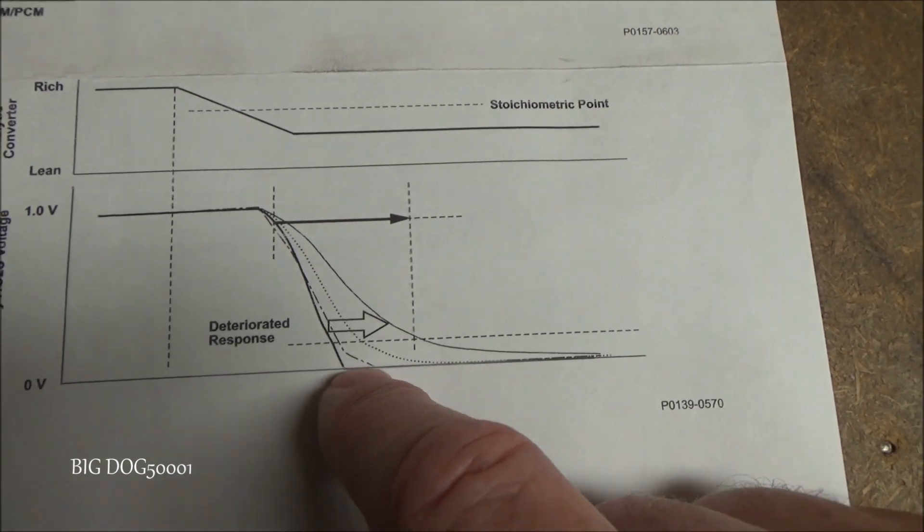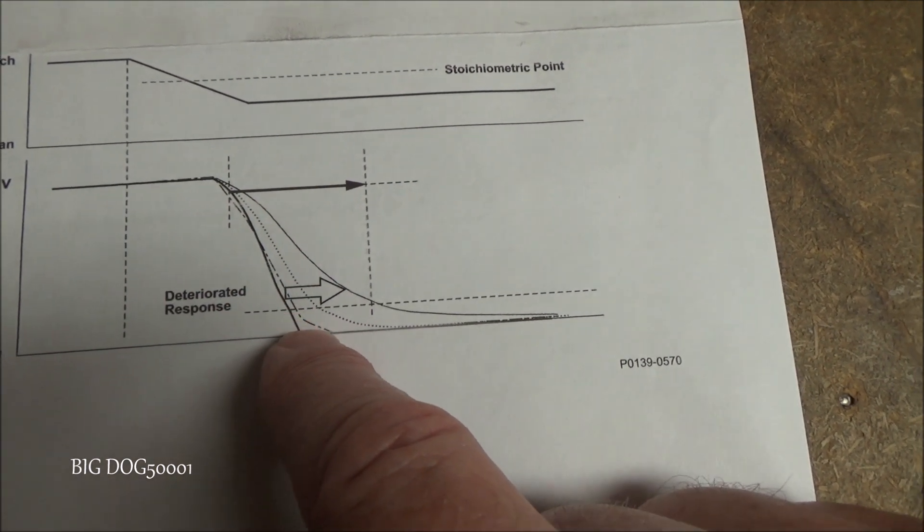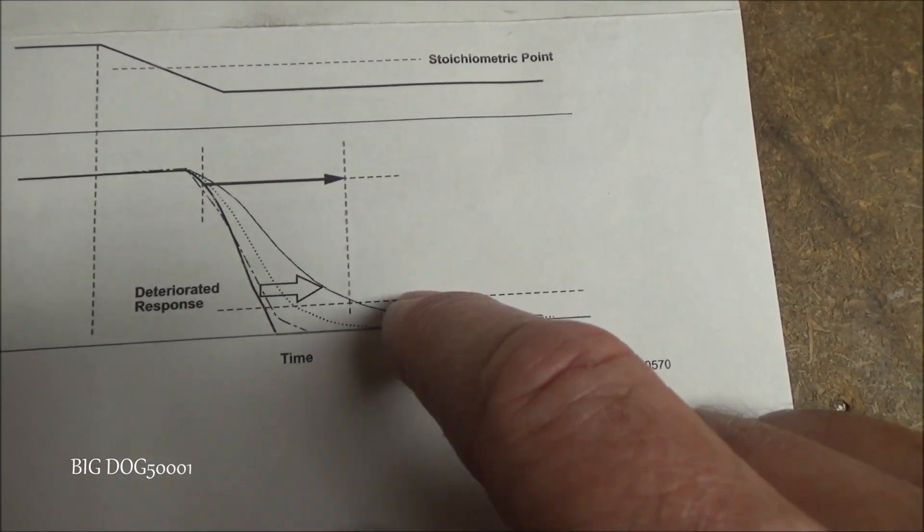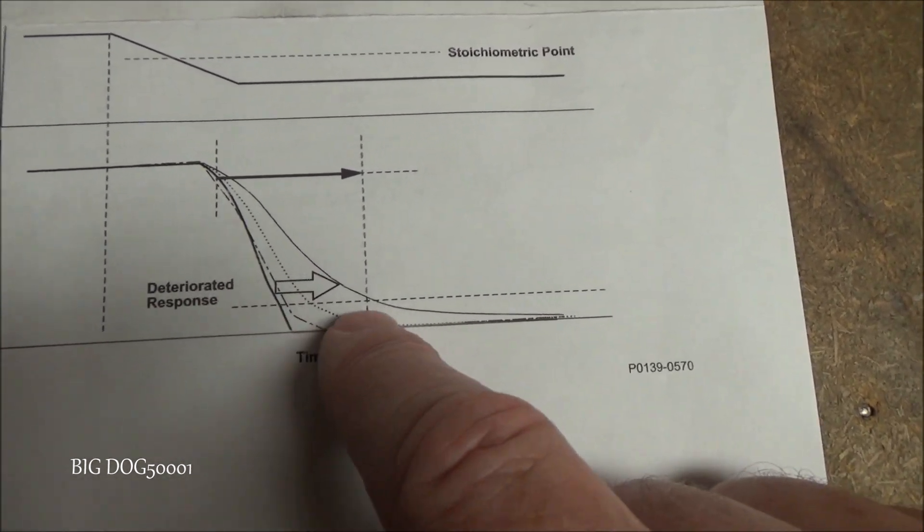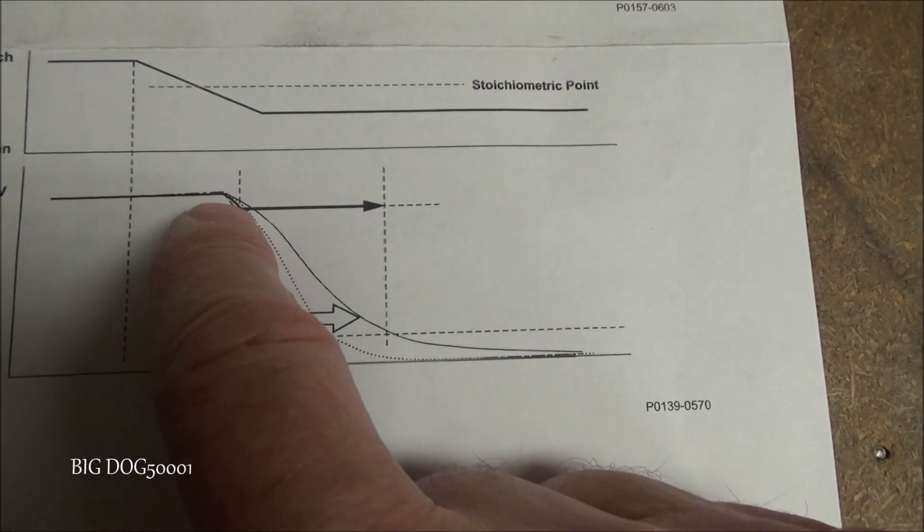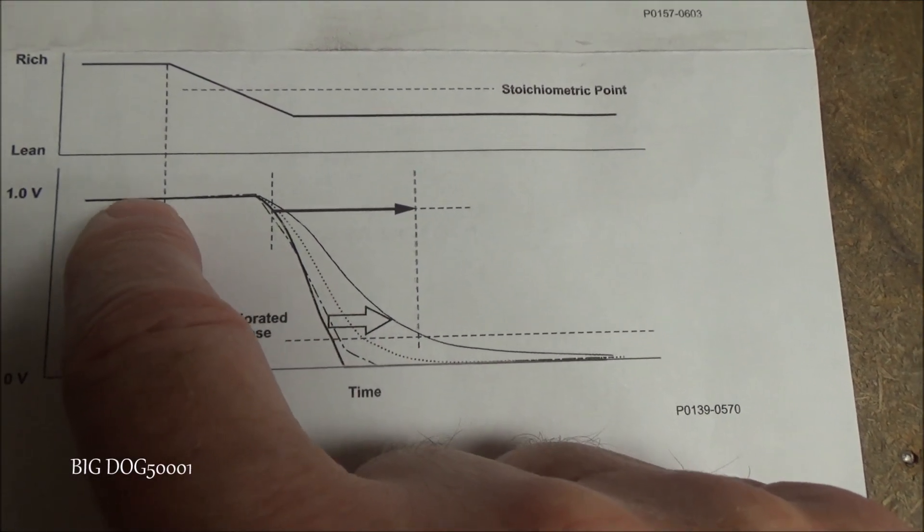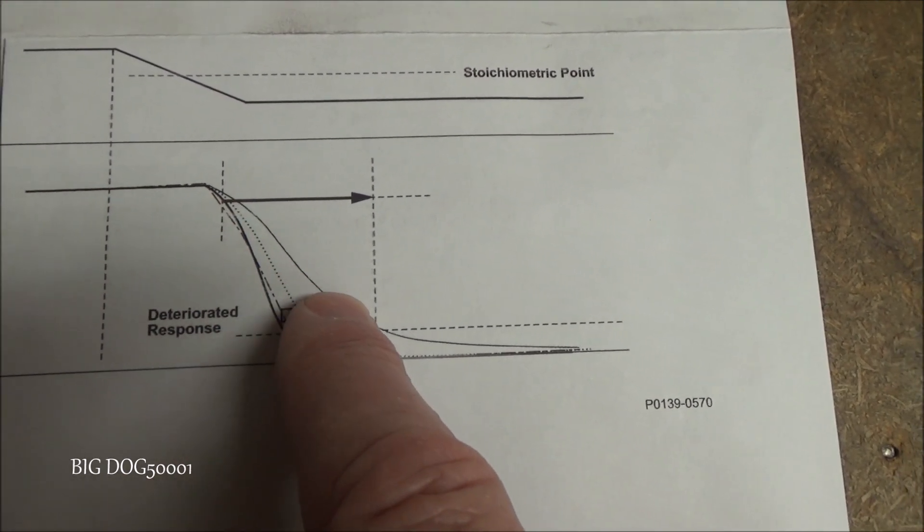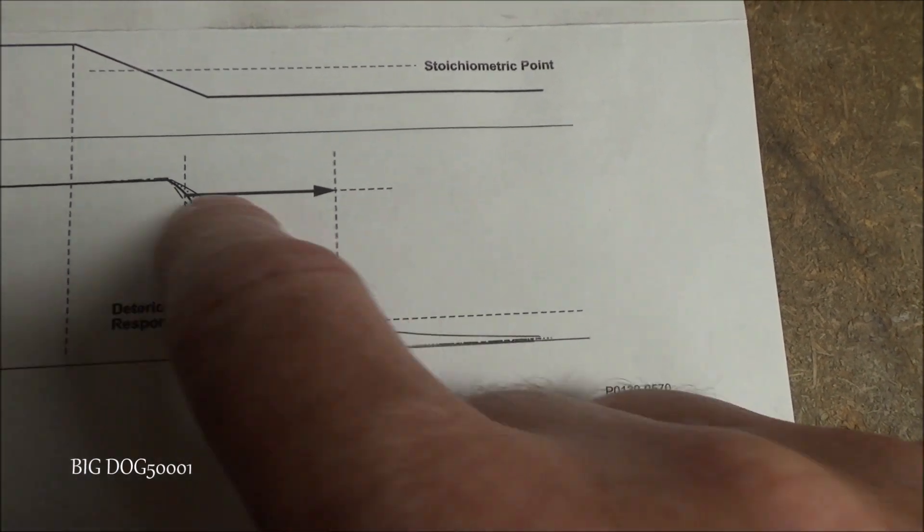So for a slow response, the voltage should drop down and start going into our operating area pretty fast. And so this isn't representative of the actual time frame but this is kind of what the computer is looking for. It wants to see it drop down in a certain time frame and start to work. When it's not working properly it's much slower getting down here to where it's supposed to be working or it'll just stay up here.